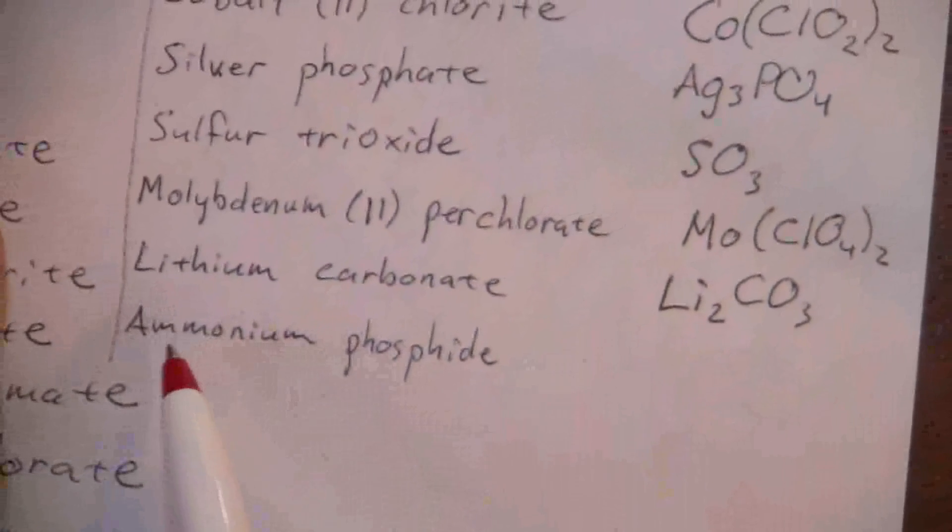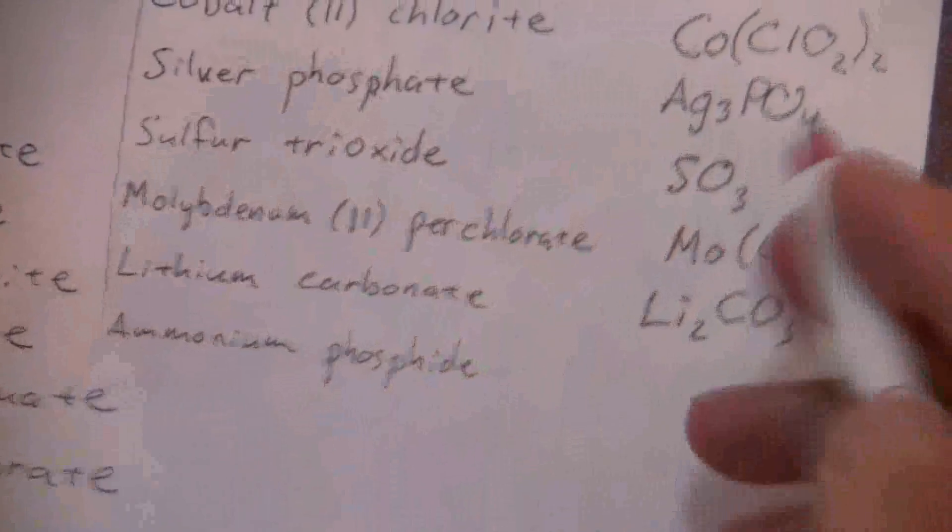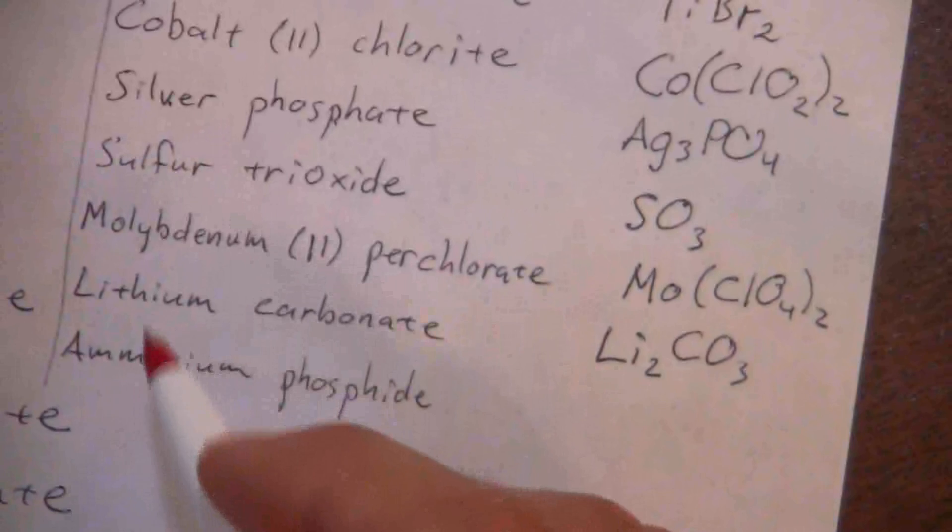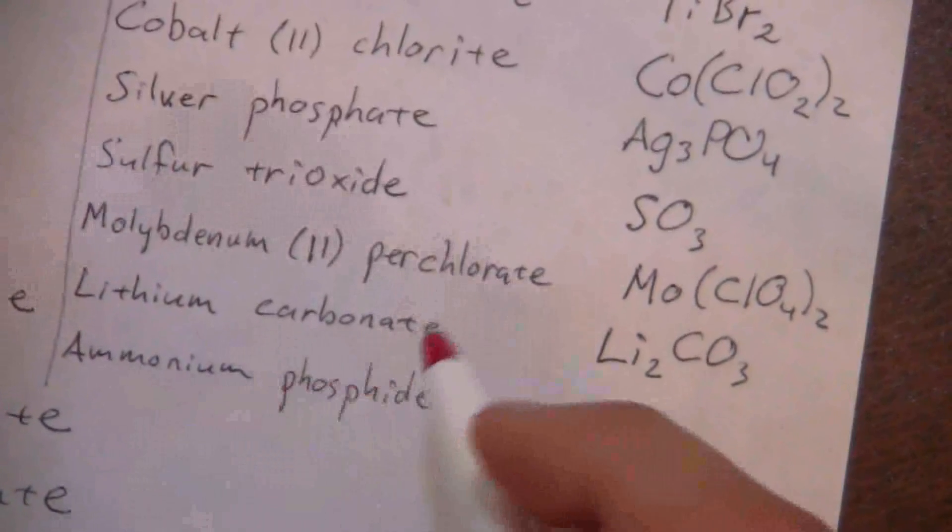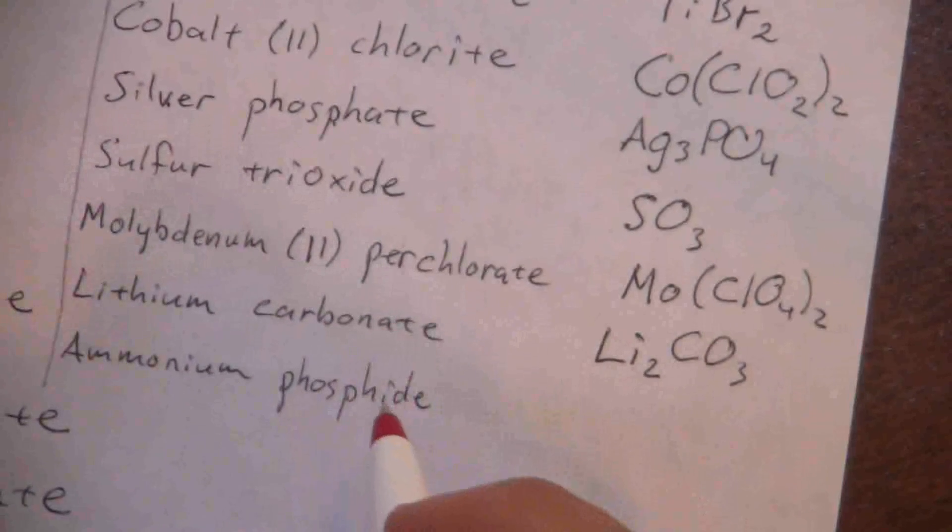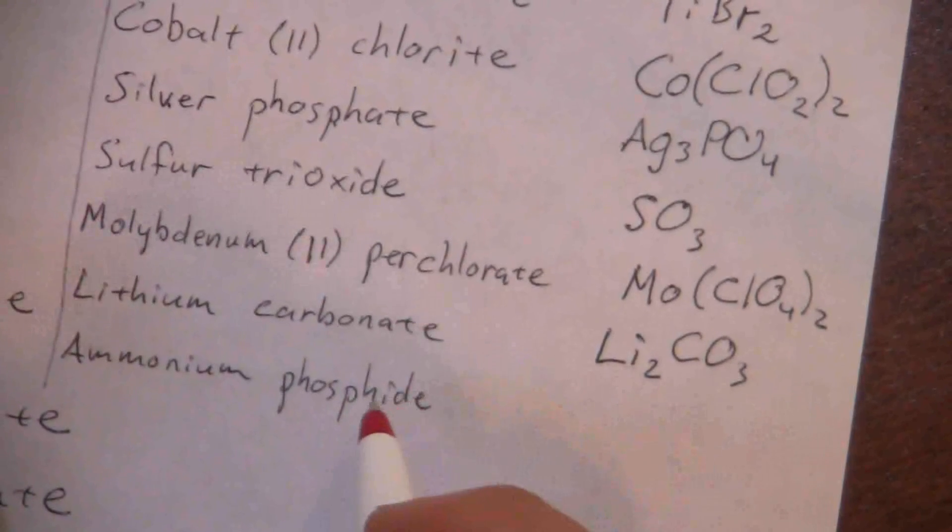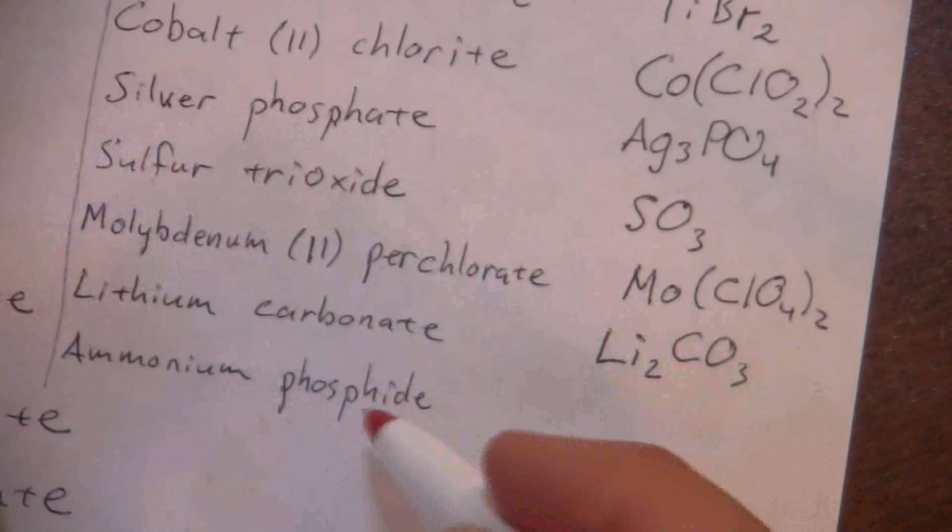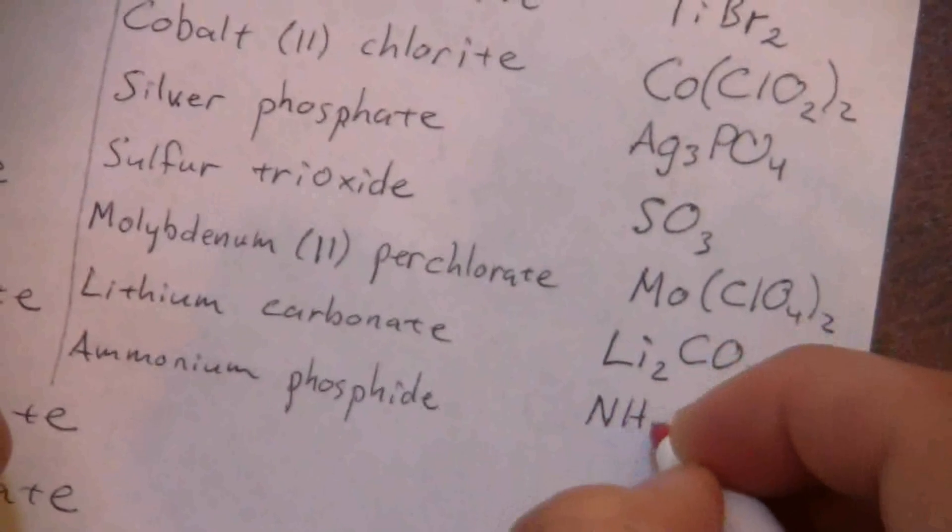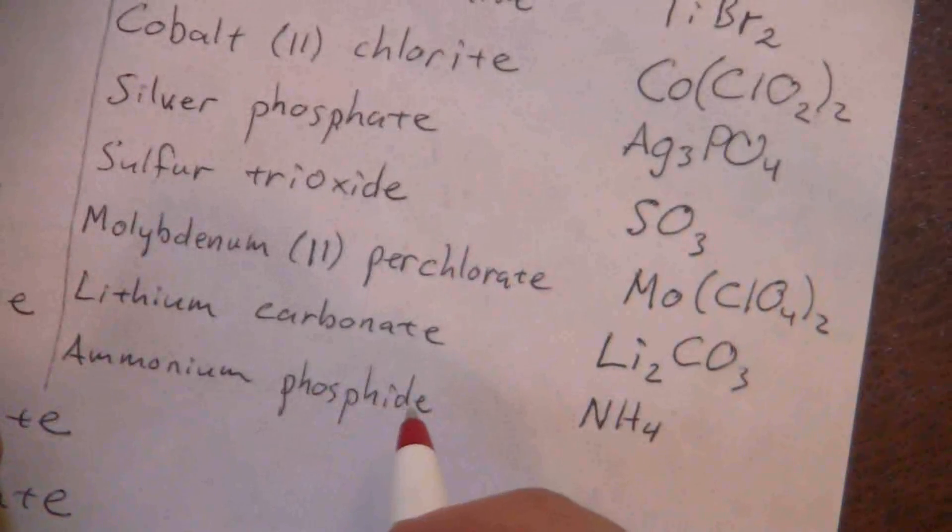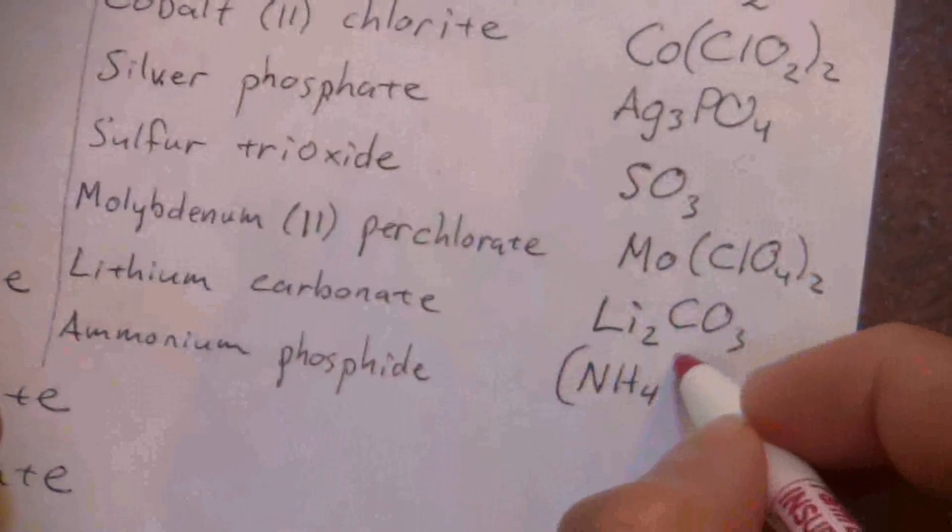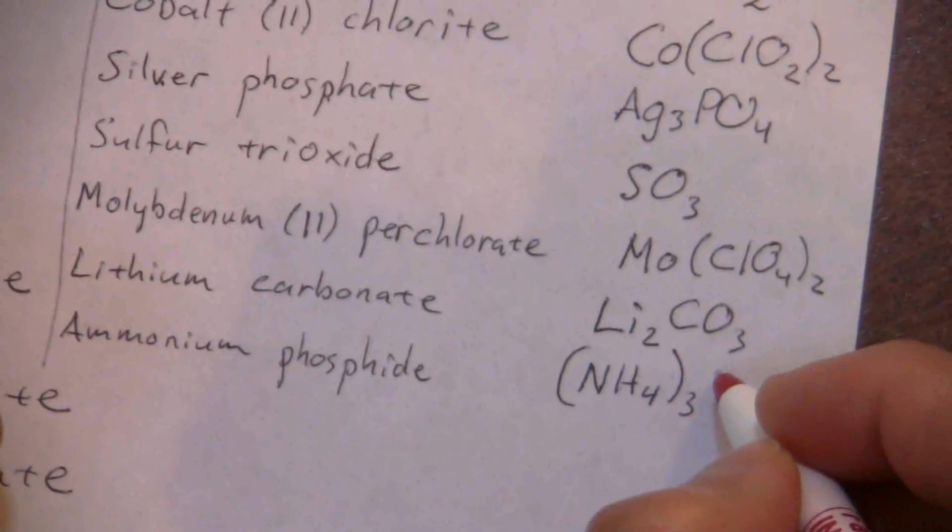Finally, ammonium phosphide. Ammonium is a polyatomic ion, NH4 with a positive one charge. Phosphide, the -ide reminds us this is a monatomic anion. The charge of phosphide is negative three, so I have to have three ammonium ions to balance out that charge. It looks like NH4 subscript 3 P.